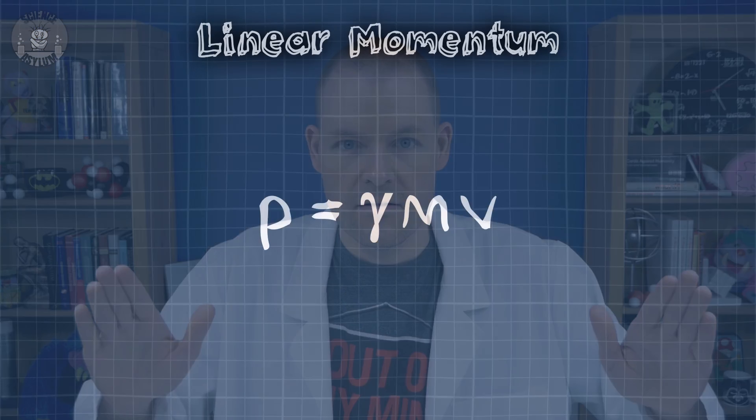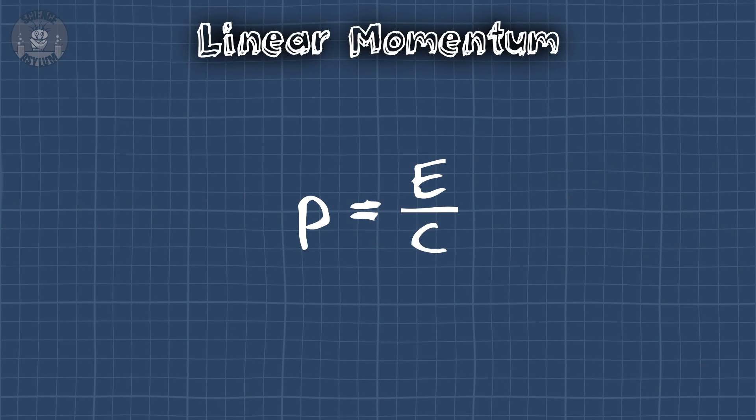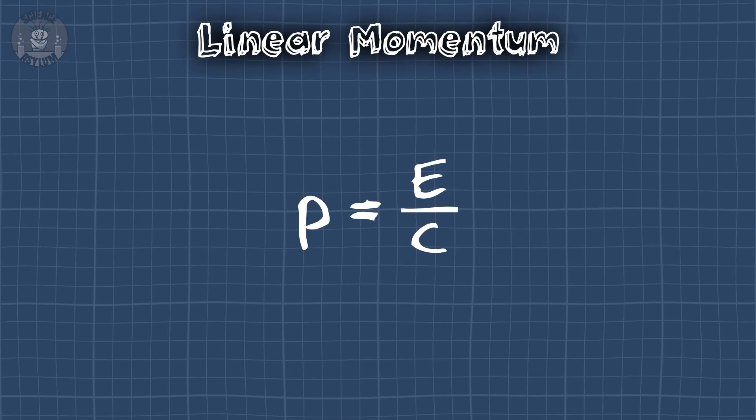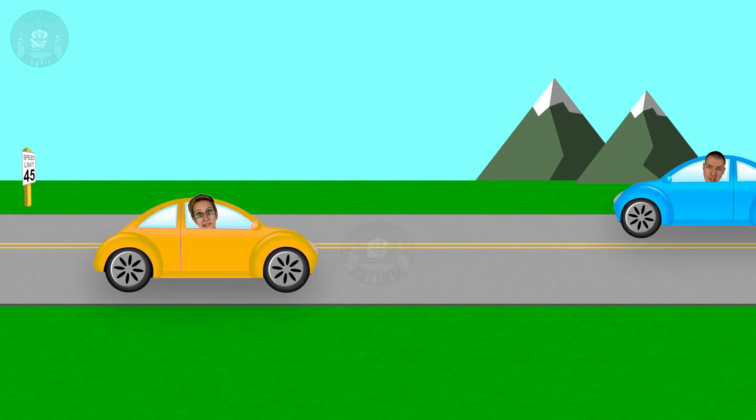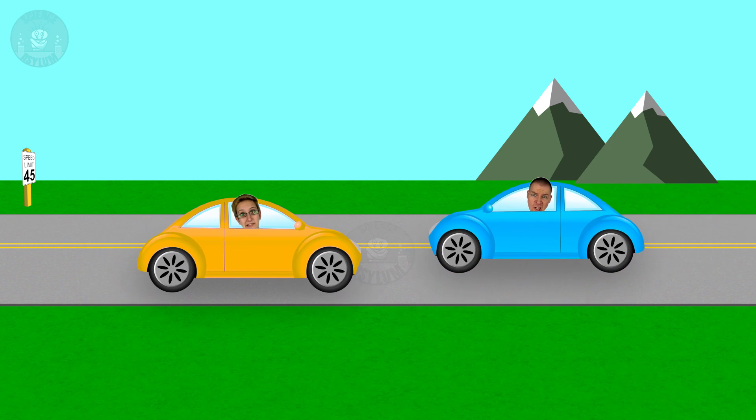That doesn't mean light has rest mass — it means the equation sucks. The equation for light looks like this. If we really want to understand how light can have momentum, we need to answer a better question: what the heck is momentum?